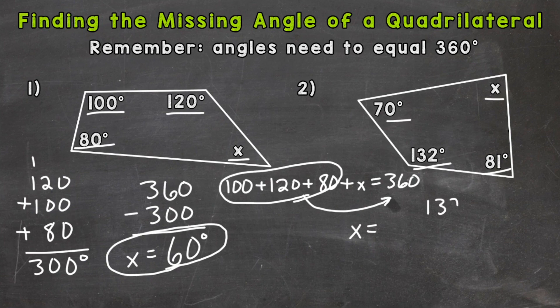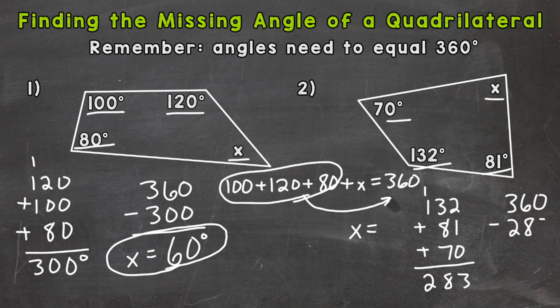So 132 plus 81 degrees plus 70 degrees equals 283 degrees. So now we need to do 360, what we need to get to, minus what we have, and see what our missing angle is.